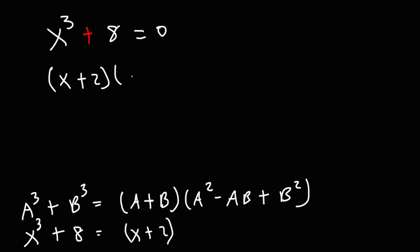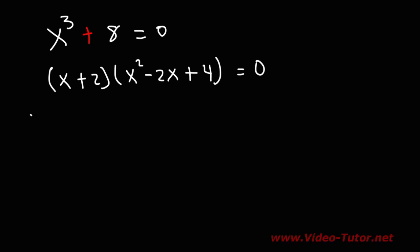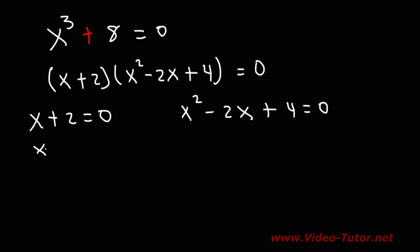A squared is x squared, A times B gives 2x with a negative sign, and B squared is 2 squared which is 4. So we get (x plus 2)(x squared minus 2x plus 4). Setting the first factor equal to 0 and subtracting both sides by 2, we get our first answer: x is equal to negative 2.